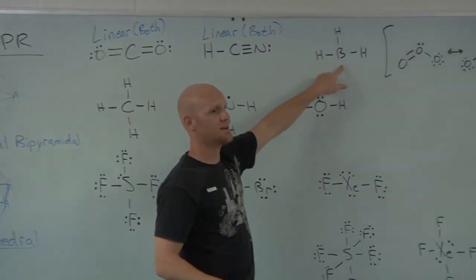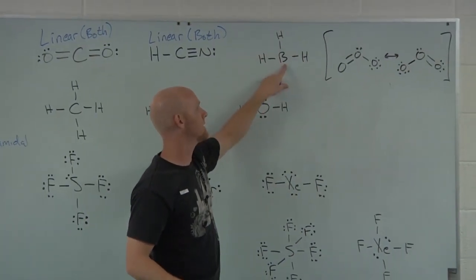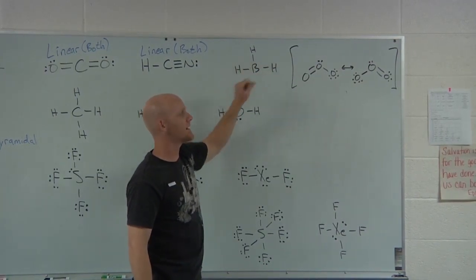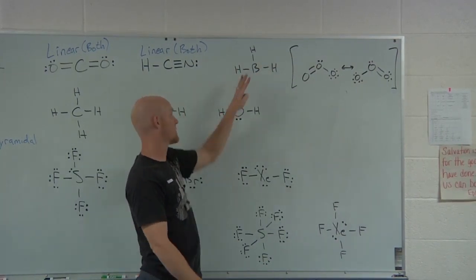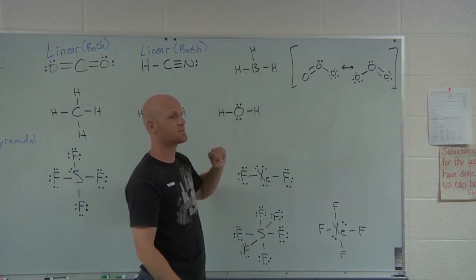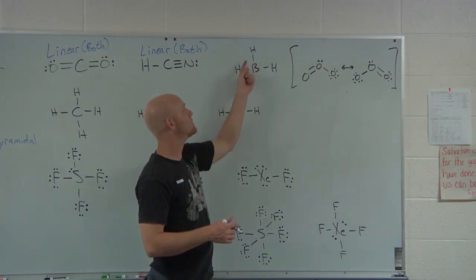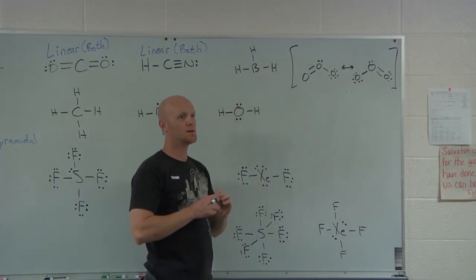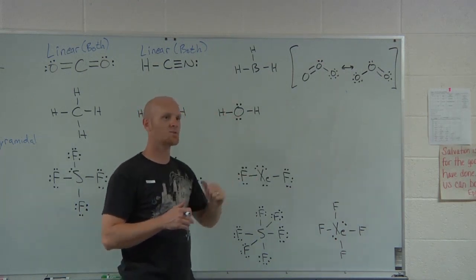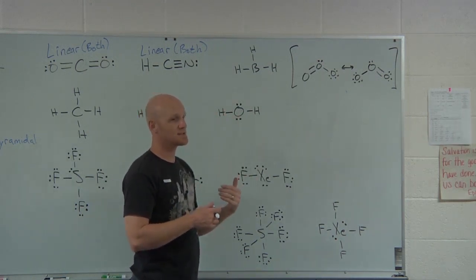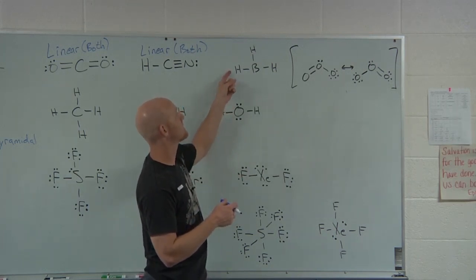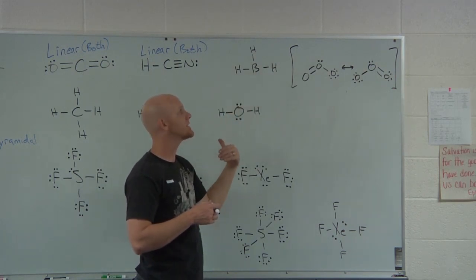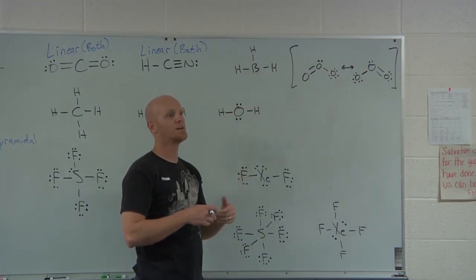For BH3, boron has three electron domains — notice it's an octet rule violator, totally fine with just six total electrons. With three domains, the electron domain geometry is trigonal planar: one plane, three corners of a triangle, 120 degrees apart. Since all three domains are bonding domains, the molecular geometry is also called trigonal planar.